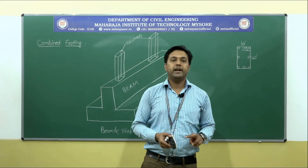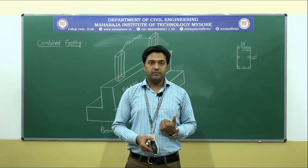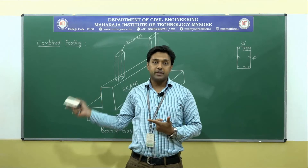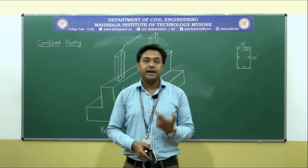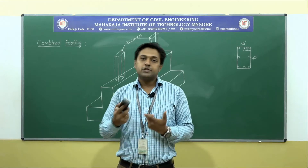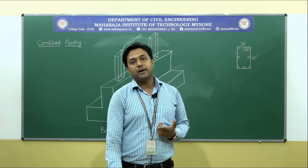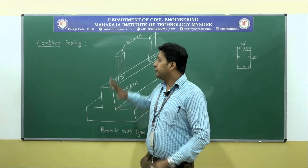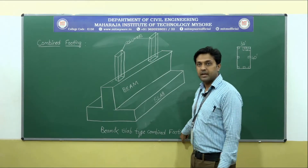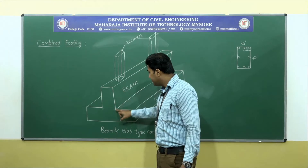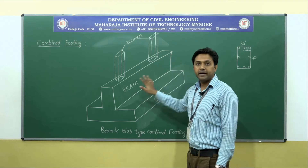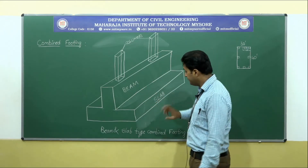In combined footing there are two types: one is the beam and slab type combined footing, and the other is the slab type combined footing. In this particular session I will be taking up the beam and slab type combined footing. I have drawn the diagram of a beam and slab type combined footing — the cross section and overall view will be like this.